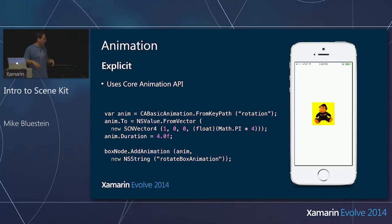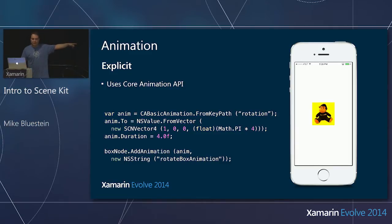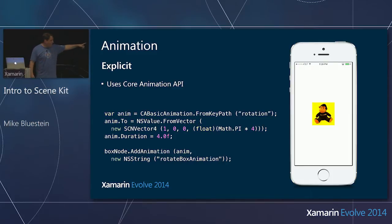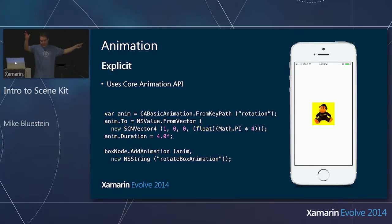There are a variety of other things beyond timing. I use key-value programming to say what I'm going to animate — rotation. I set the values I'm going to go to, a duration, and what I'm going to rotate to: a vector class that specifies four components. Then I add the animation.